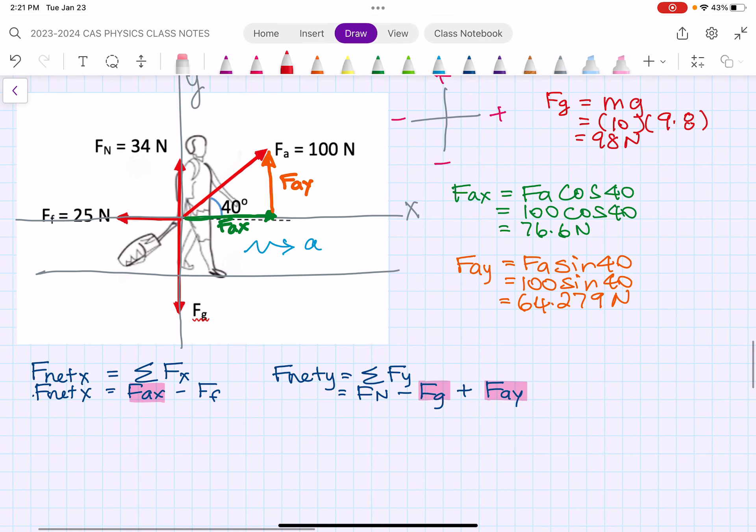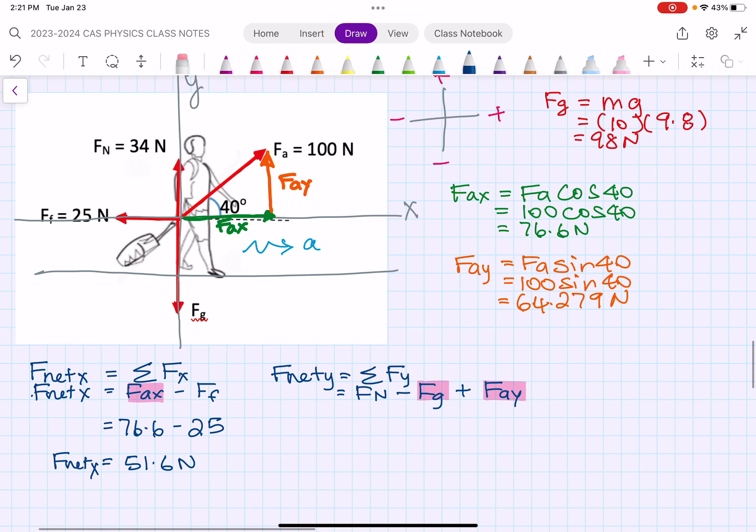Let's start with the x direction. F-net in the x is equal to FA_x, which is 76.6, minus F_f, which they tell us is 25. When we do that, we get F-net in the x equal to 51.6 newtons. F-net in the y is equal to F_N, which they tell us is 34 newtons, minus F_g, which we found to be 98 newtons, and then plus 64.279. If you do a little bit of rounding, you'll find that this is virtually zero newtons.